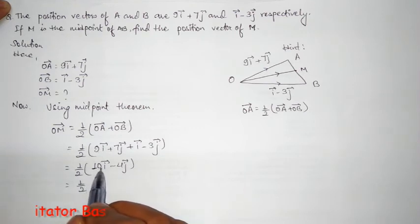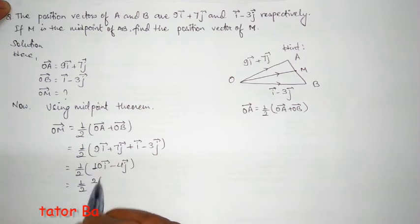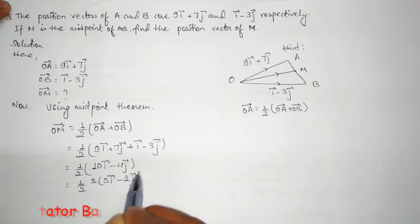See, you can take the scalar term from these two vectors. Means, 2 is common. It's 5i minus 2j. This 2, 2 is cancelled. So, they divide.